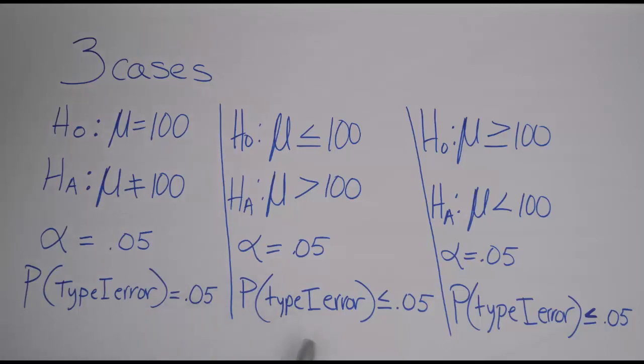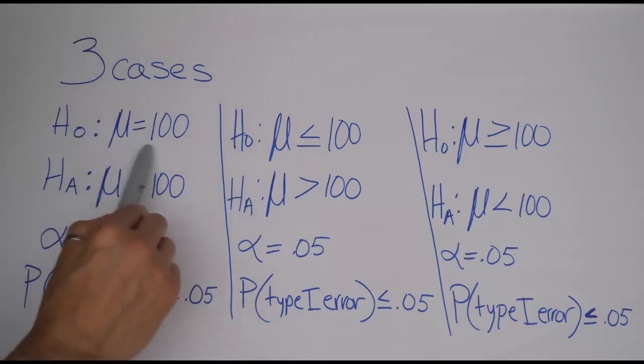but it doesn't have to be 5%. Of course, it could be 1% or 10% or really any percent that you decide. But the point is that whatever alpha is, that's usually said to be the probability of a type 1 error.